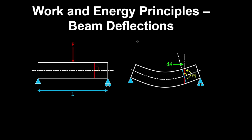Therefore, the work done by the bending moment to rotate the section at angle dθ can be written in this form. Integrating along the length of the entire beam from 0 to L gives the internal work done due to the deformation of the beam, and that is equal to the external work done by the load.